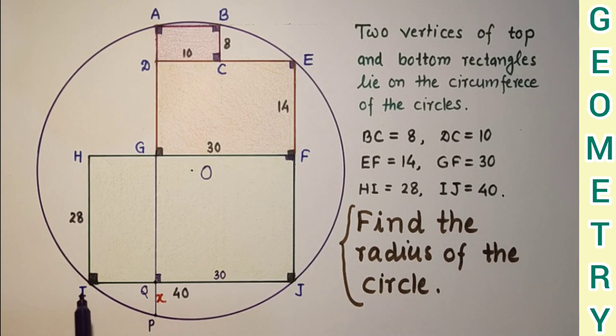And since the whole thing is 40, so IQ is 40 minus 30, this is 10.